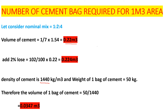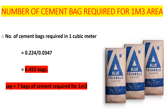The volume of cement required in one cubic meter area is 0.224 cubic meters. To find the number of bags, we divide the required cement volume by the volume per bag: 0.224 divided by 0.0347 gives us 6.544 bags. So we can say 7 bags of cement are required for one cubic meter.